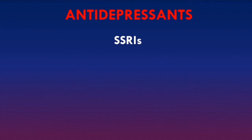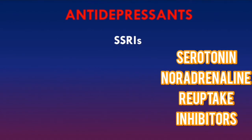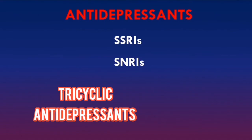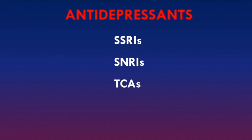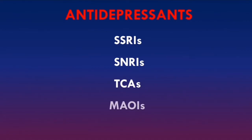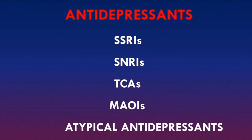There are different classes of antidepressants. One class are the selective serotonin reuptake inhibitors, also known as SSRIs. Another class are the serotonin noradrenaline reuptake inhibitors, or SNRIs. Another class are the tricyclic antidepressants, or TCAs. The other class are the monoamine oxidase inhibitors, also known as MAOIs. Antidepressants which do not belong to any of these classes are called atypical antidepressants and include drugs such as mirtazapine.